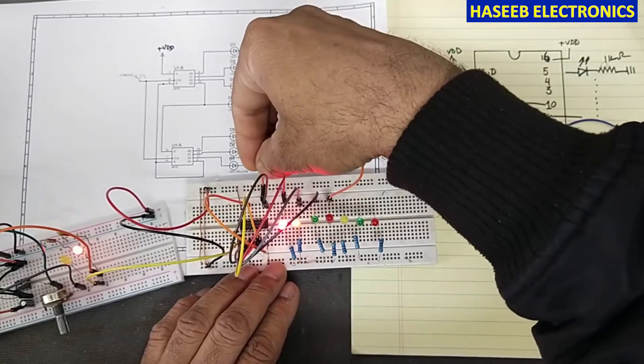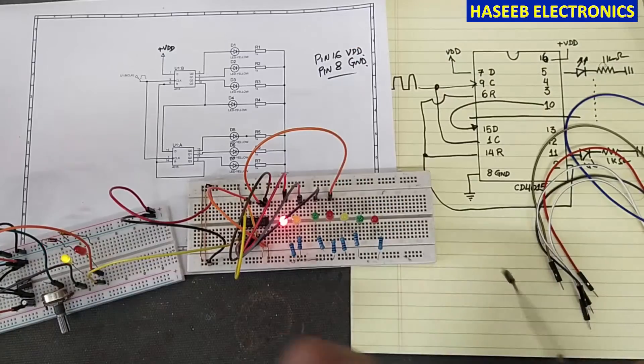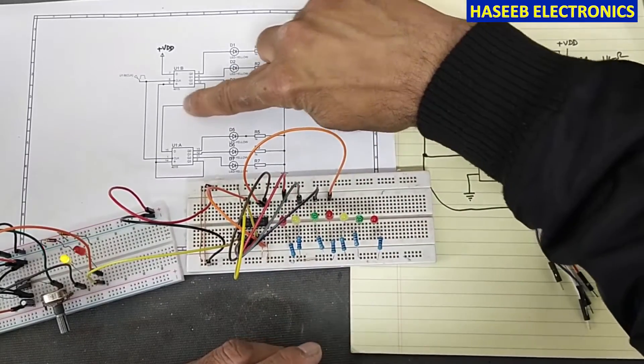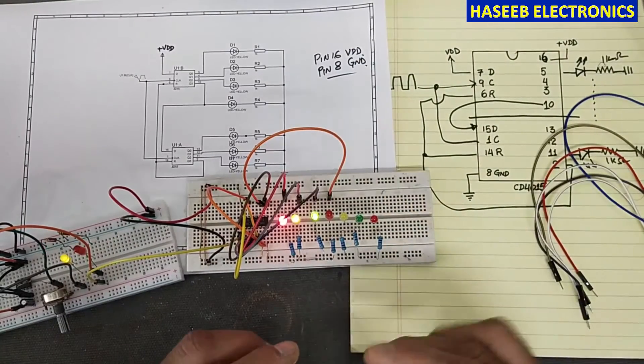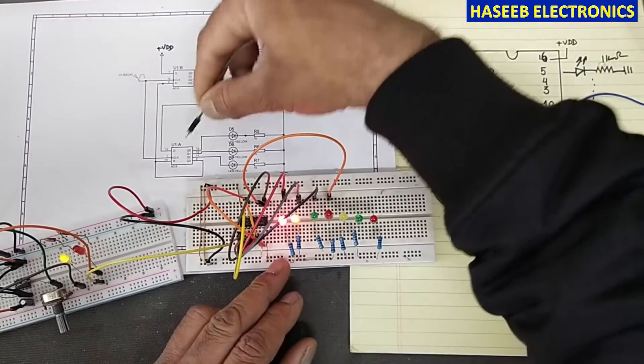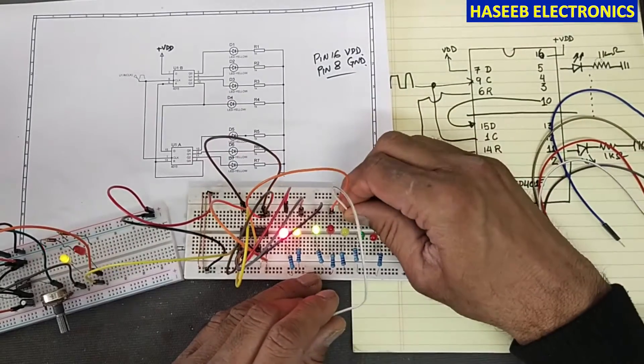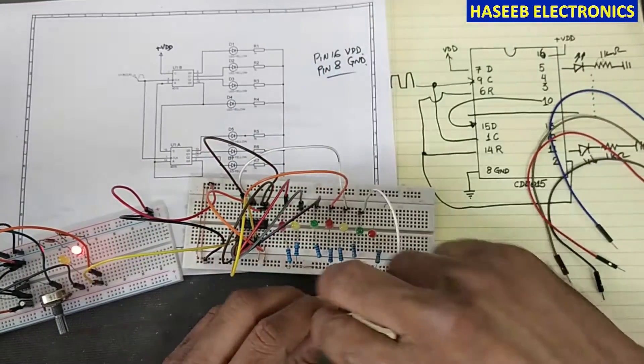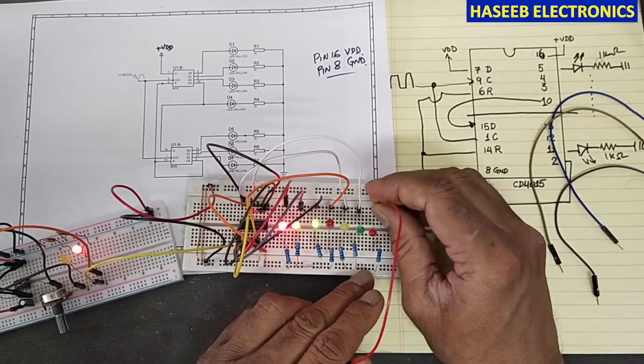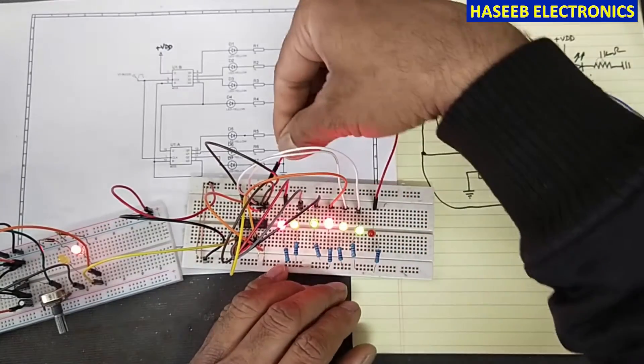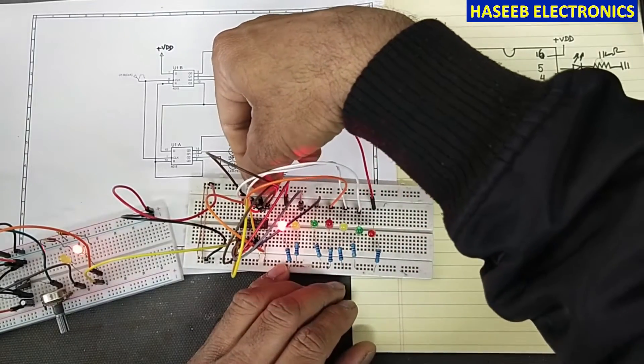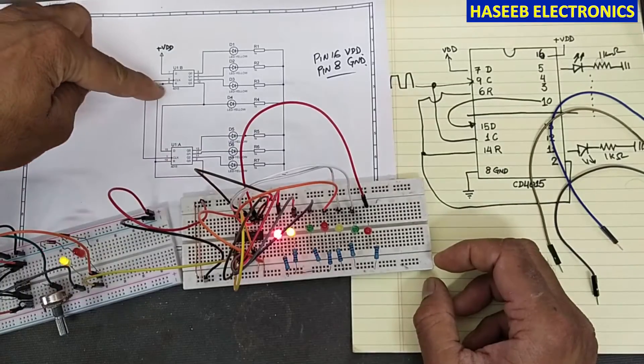Now we will connect pin 10 to the next output. Pin 10 will connect to pin 15 as well to enable the next stage. Next, pin 13, then pin 12, and the last output we will connect to pin 11. Pin 2 we are connecting to reset.